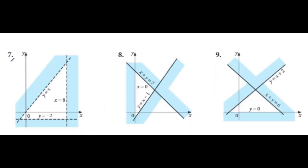Now check question number 7. Here this line is y is equal to 7, and the unshaded region is on the downward side, so its inequality will be y is less than 7. There will be no equal sign because this is a dotted line. Similarly, this line is x is equal to 8 and the region is on the left hand side, so it will be x is less than 8. And this line is y is equal to minus 2, with the unshaded region upward, so the inequality will be y is greater than minus 2.